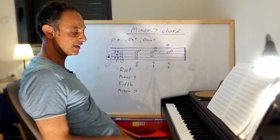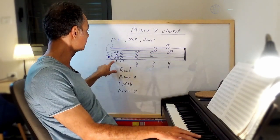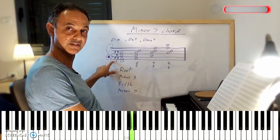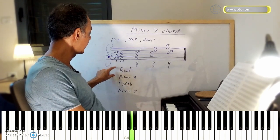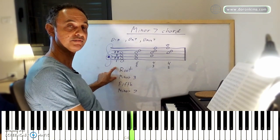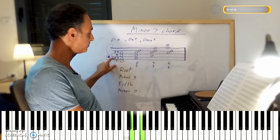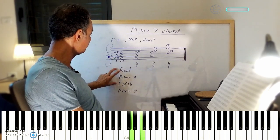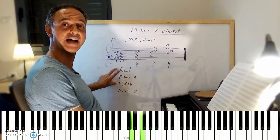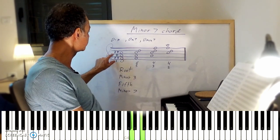So the D-7 sounds like this. We have the root, of course, which is D. We have a minor 3rd up from the root, which is the note F. We have a perfect 5th up from the root, which is the note A.